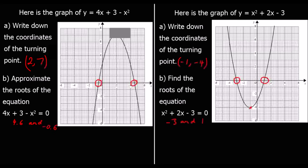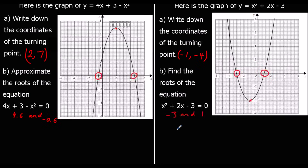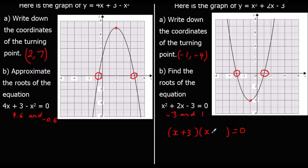In this example we could have also worked that out by factorising — putting it into brackets. What multiplies to make -3 and adds to make +2? That's +3 and -1. What makes the first bracket 0? That's -3. What makes the second bracket 0? That's +1. So we could have solved it by factorising, but we can also solve it by looking at the graph.